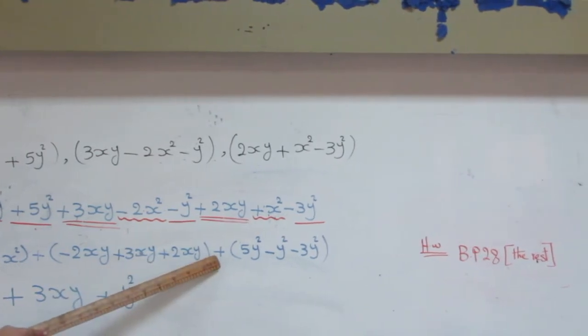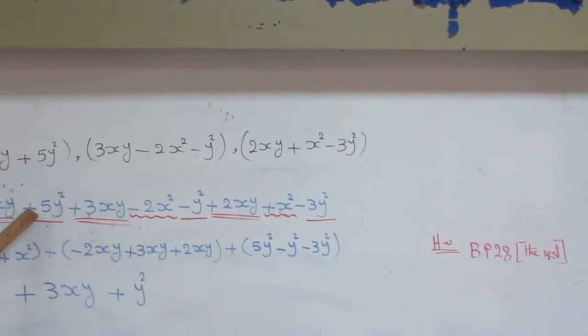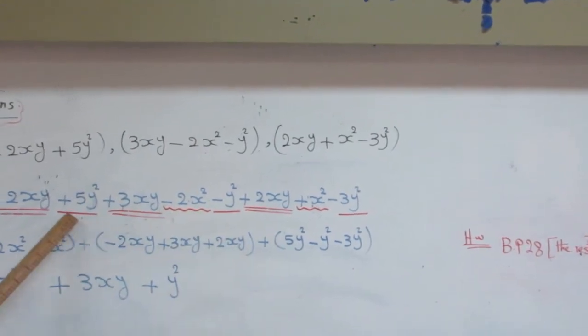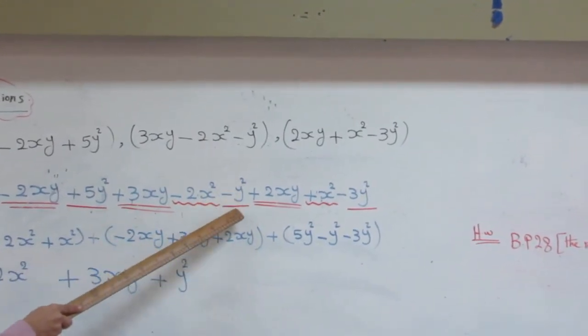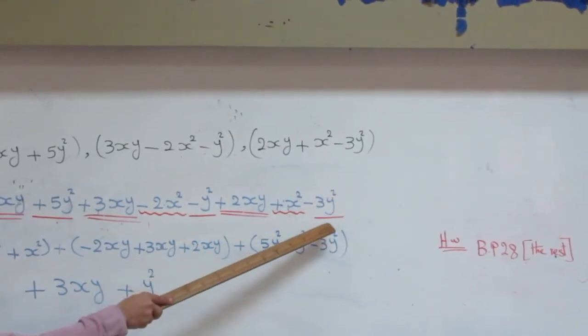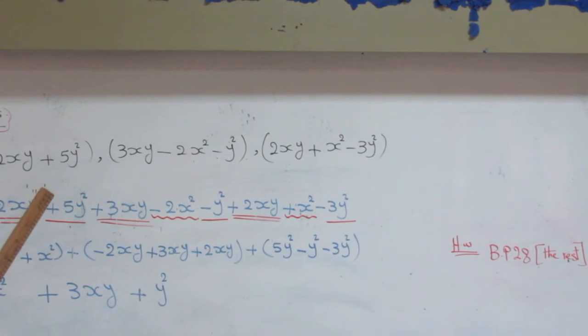The last group of expressions I have here. Plus 5Y², I write 5Y², make a line. Minus 2Y², make a line. And minus 3Y², make a line. By the end, I have to count all of my terms.